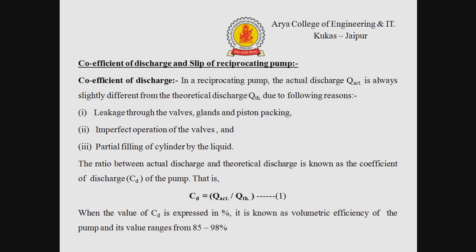In a reciprocating pump, the actual discharge is always slightly different from the theoretical discharge due to the following reasons: first, leakage through the valves, glands and piston packing; second, imperfect operation of the valves; and third, partial filling of the cylinder by the liquid. The ratio between the actual discharge and theoretical discharge is known as the coefficient of discharge of the pump.